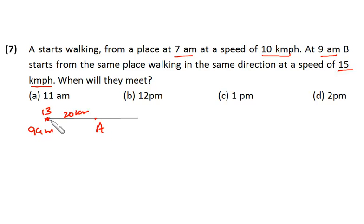Now once again if B starts walking from this place simultaneously, it is assumed that A is also walking. That means A is also not going to stop. Now A will be moving with a speed of 10 km per hour and now B is moving with a speed of 15 km per hour.